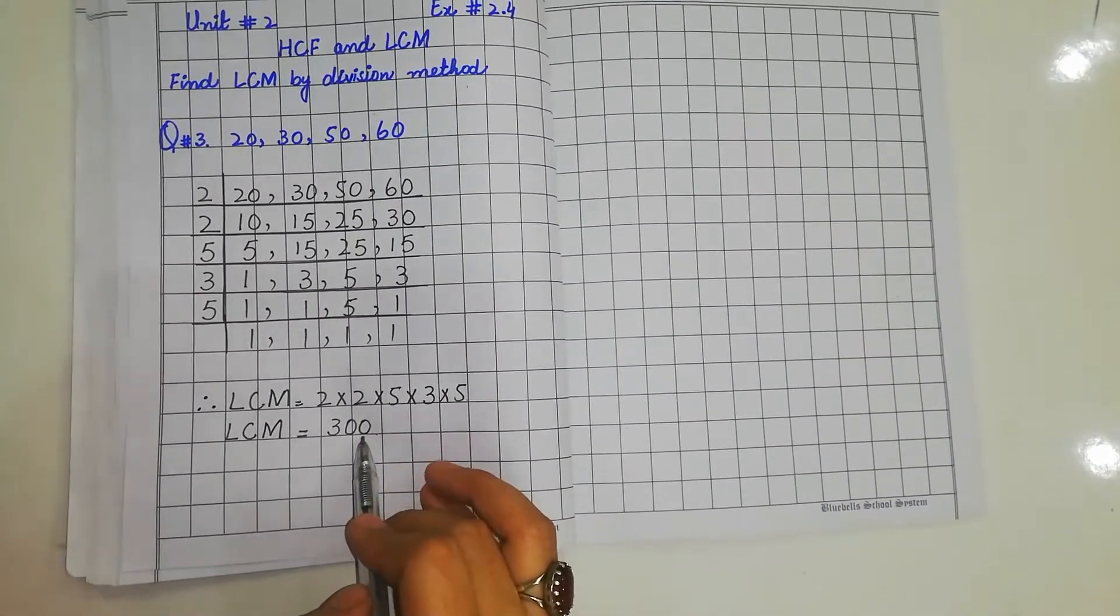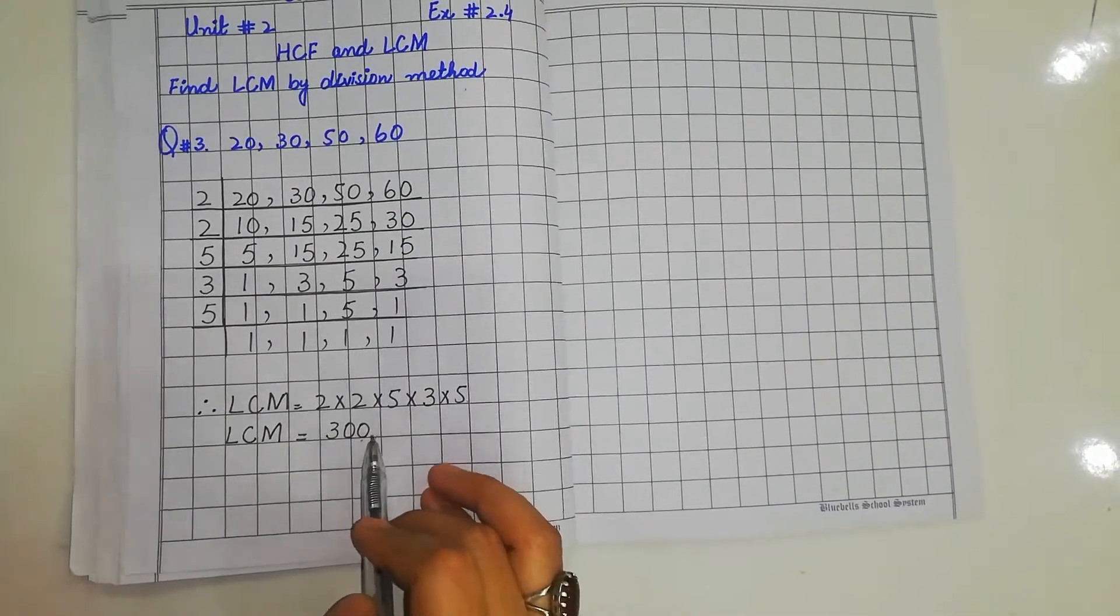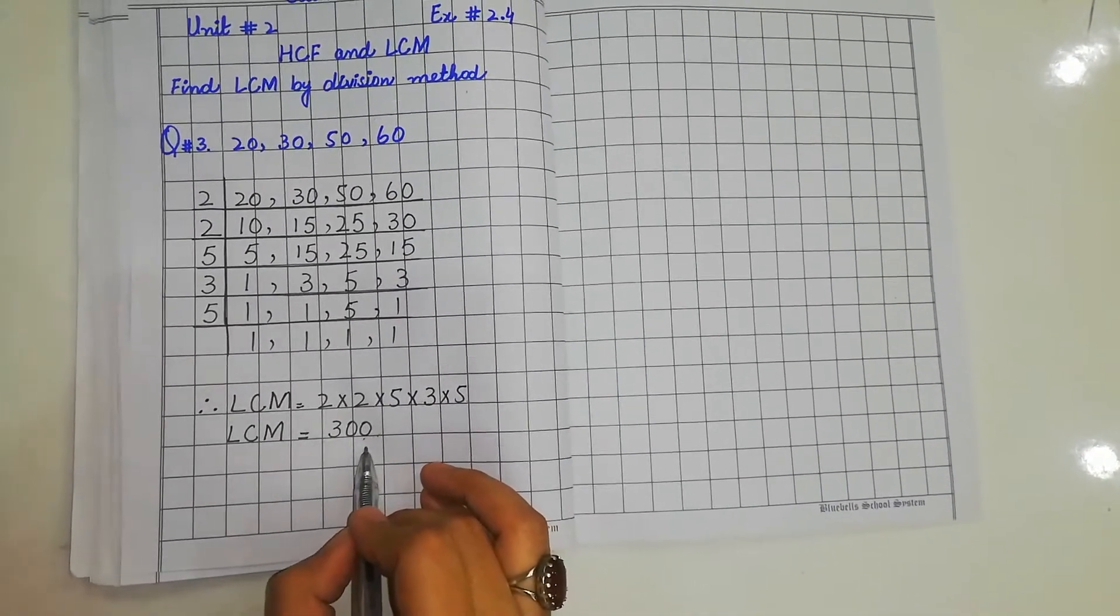So the LCM of 20, 30, 50, and 60 is 300. Okay students?